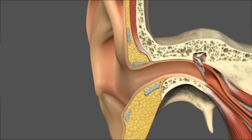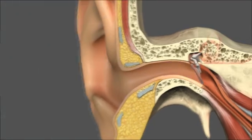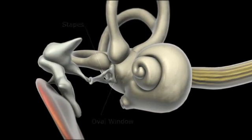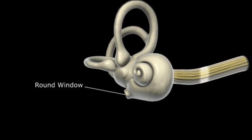How does sound enter the cochlea? Compression hits the tympanic membrane, causing the stapes to transfer force to the oval window. From there, sound moves to the round window.